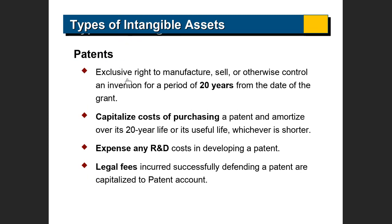Patents are an exclusive right to manufacture, sell, or otherwise control an invention for a period of 20 years from the date of the grant. For example, as soon as a coronavirus vaccine becomes available, some company will patent it. Any time new technology comes, it's patented. There was a big lawsuit between Apple and Samsung because the technology Apple came up with was patented. These 20 years is the life of the patent — you capitalize it and amortize it over 20 years. There is no concept of salvage value in intangible assets; it completely goes away after 20 years.